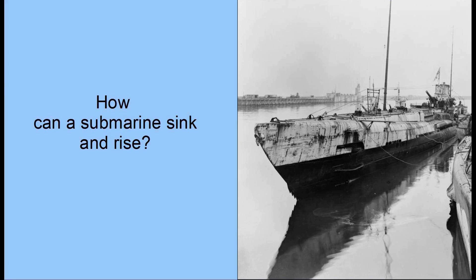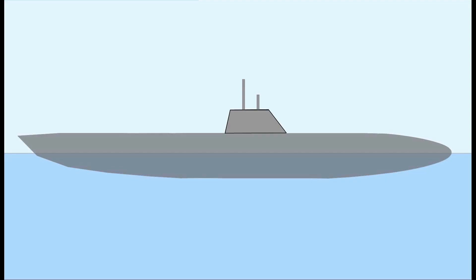Hello, today I want to talk about how a submarine can sink and rise. Most submarines have two types of tanks: the main ballast tank and the trim tanks.